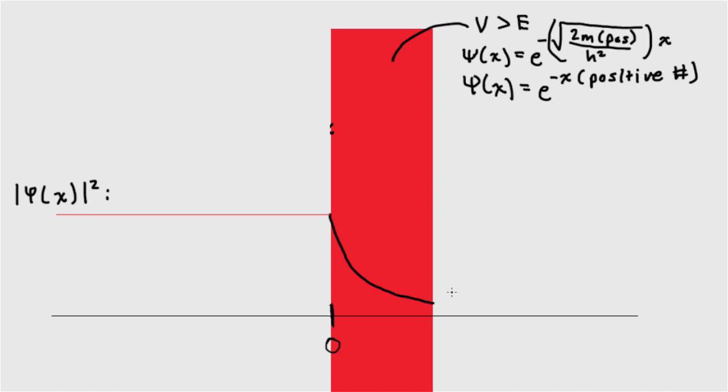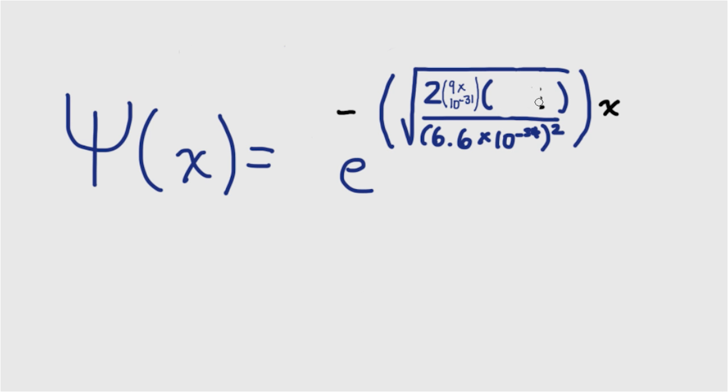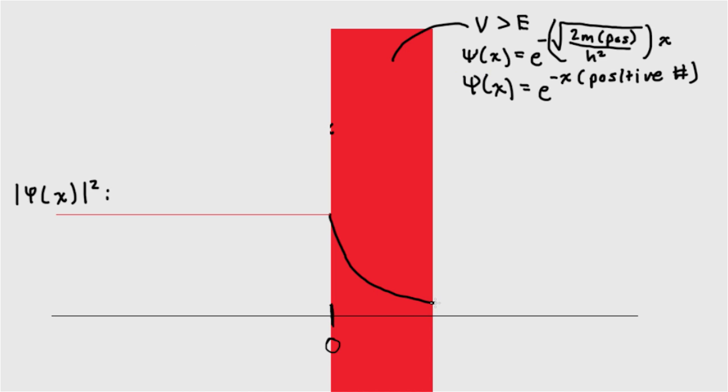On the right side of the barrier, the barrier stops exerting a potential energy on the particle. So v minus e becomes negative, and once again, we have an imaginary number in the exponent. We find another sine-looking curve on the right side, but because of the enormous drop in the probability due to the exponential decay, the amplitude or height of the curve on the right side is much smaller than that on the left.